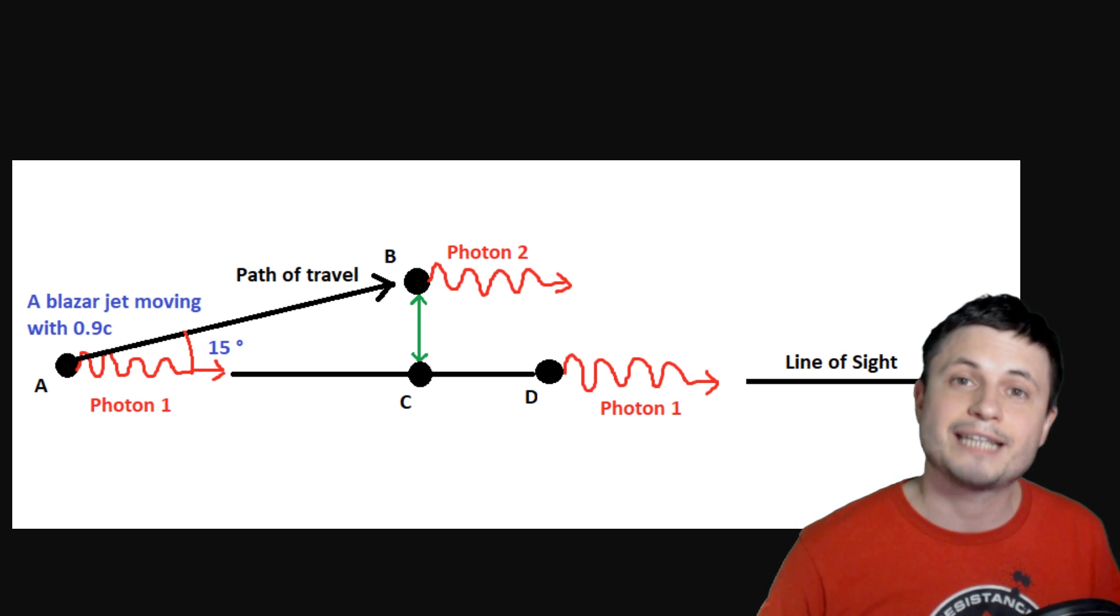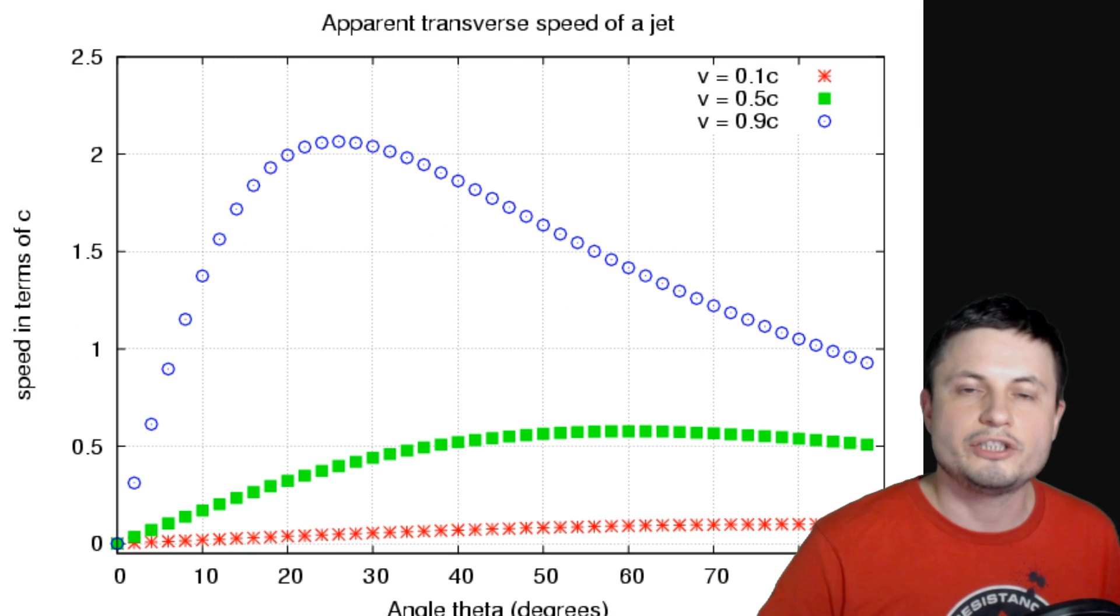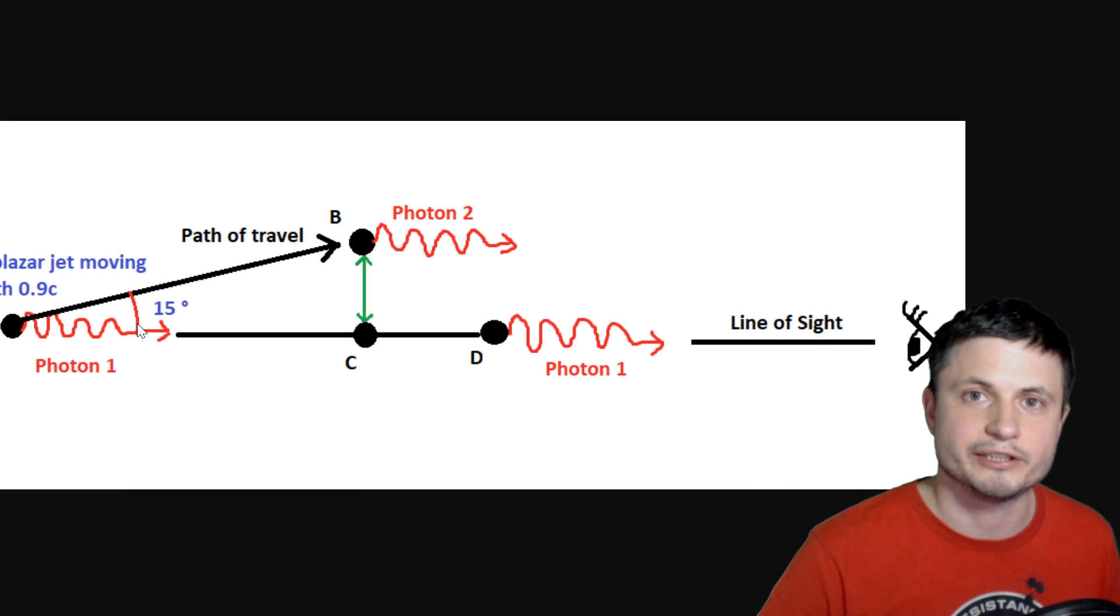or even eight times faster than the light itself. Now, all of this depends on two things. First of all, how fast the jet itself is releasing various particles. And second of all, what the angle of the observation or the angle of line of sight is.